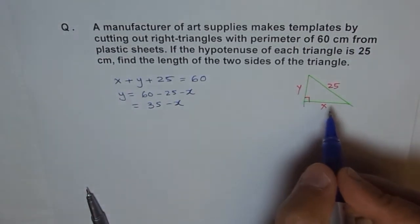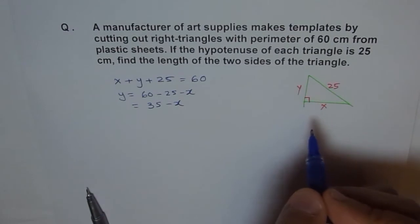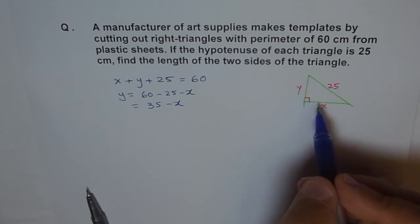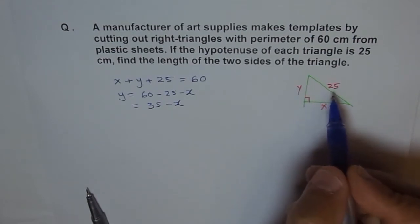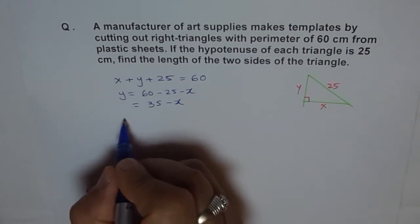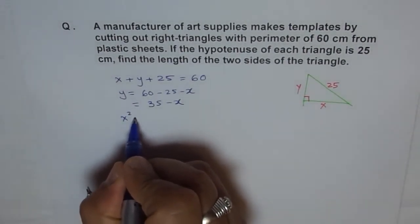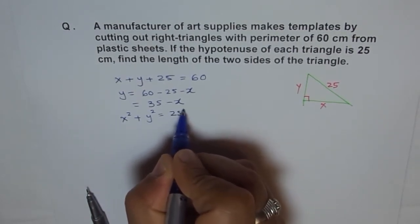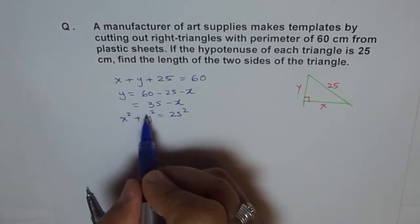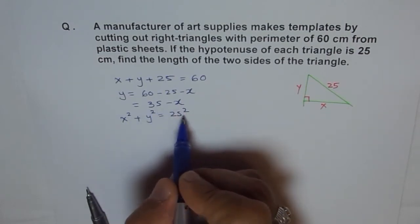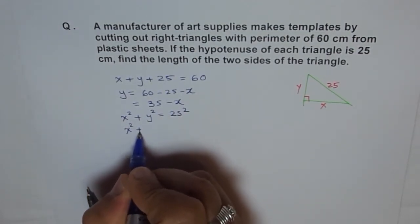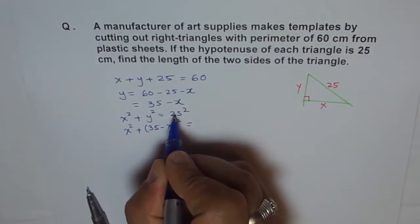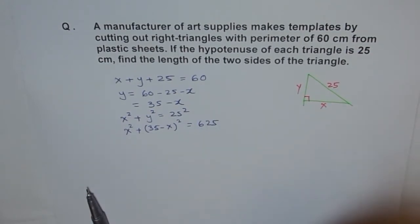Now we need another relation to figure out how to relate these things so that we can find x and y. You remember the Pythagorean theorem: x squared plus y squared equals 25 squared. So we can write x squared plus y squared equals 25 squared. Now you can write y as 35 minus x and expand it. So we have x squared plus (35 minus x) squared equals 25 squared, which is 625.